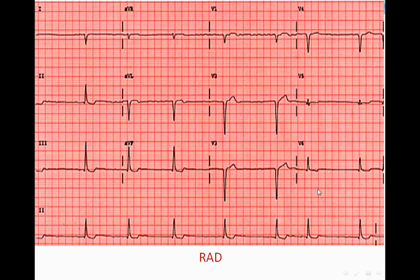Example: Here, the complex in lead I is negative — indicating right axis deviation. Looking at lead III, it is positive, confirming this is right axis deviation. AVR is negative as expected, so this is mild right axis deviation.